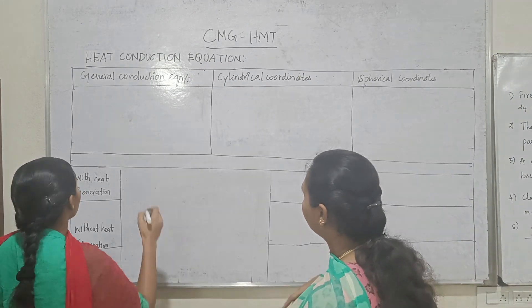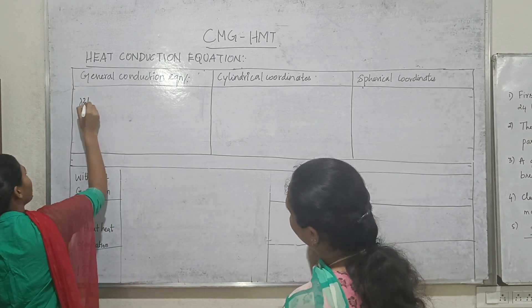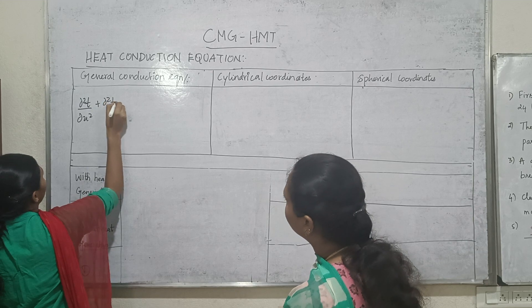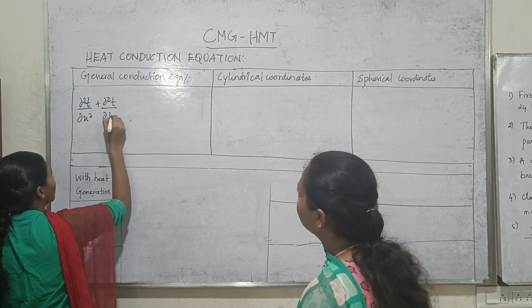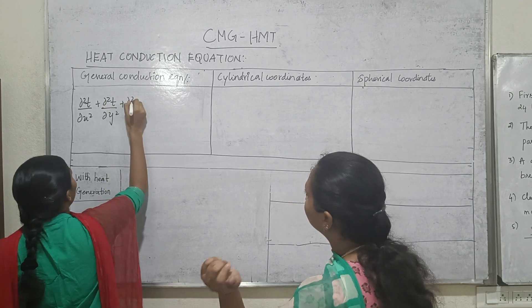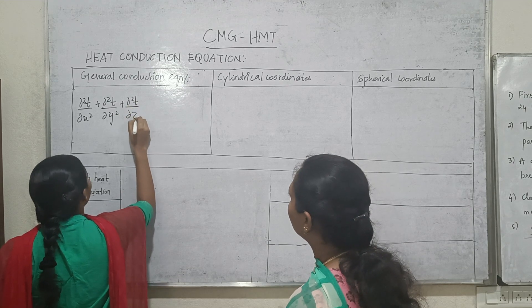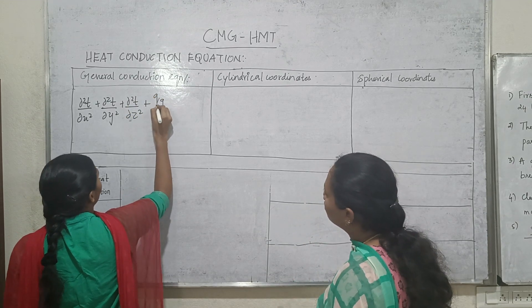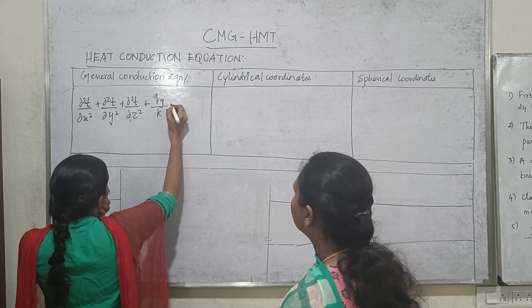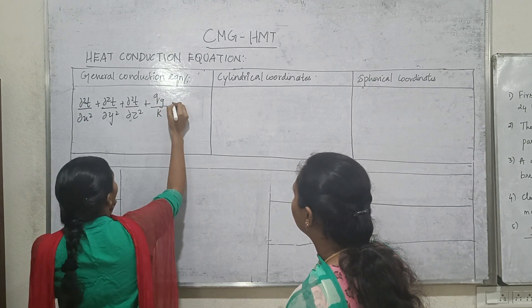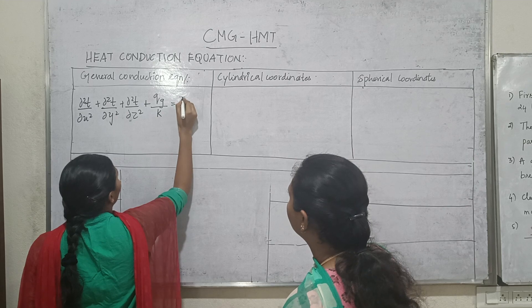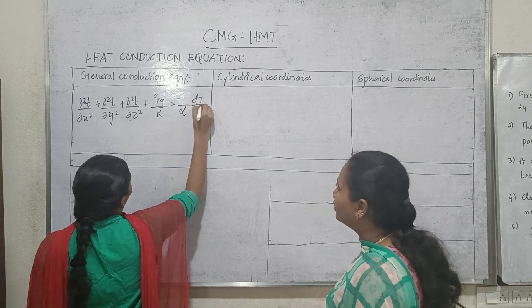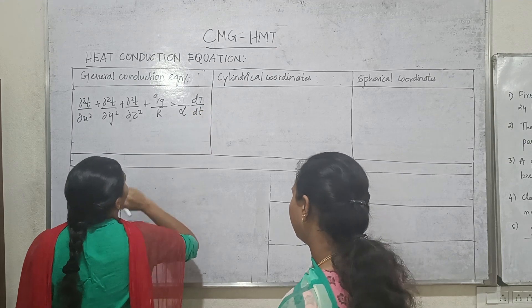The general heat conduction equation: ∂²T/∂x² plus ∂²T/∂y² plus ∂²T/∂z², plus heat generation Q divided by k, is equal to 1/α into ∂T/∂t.